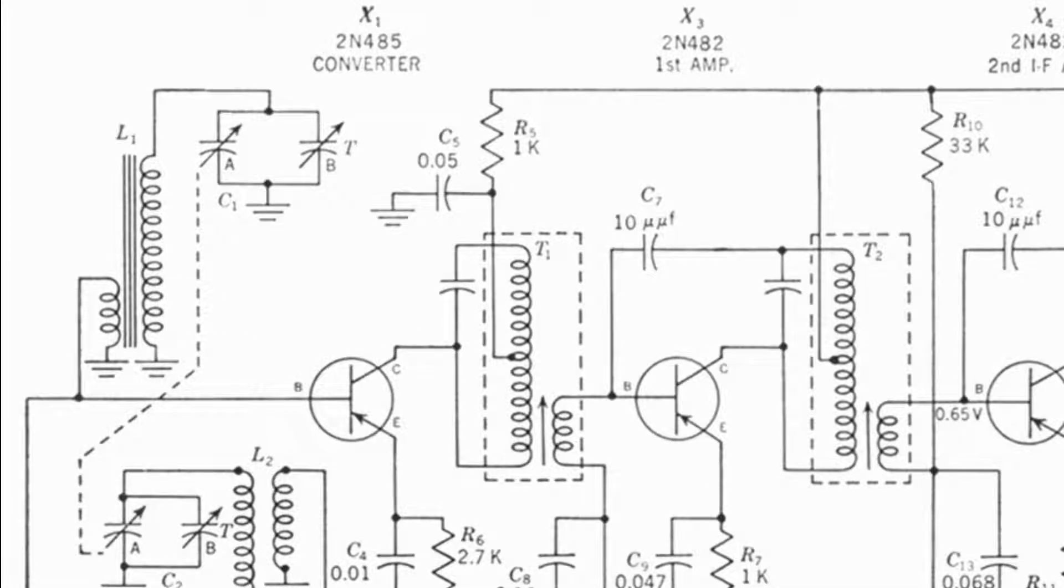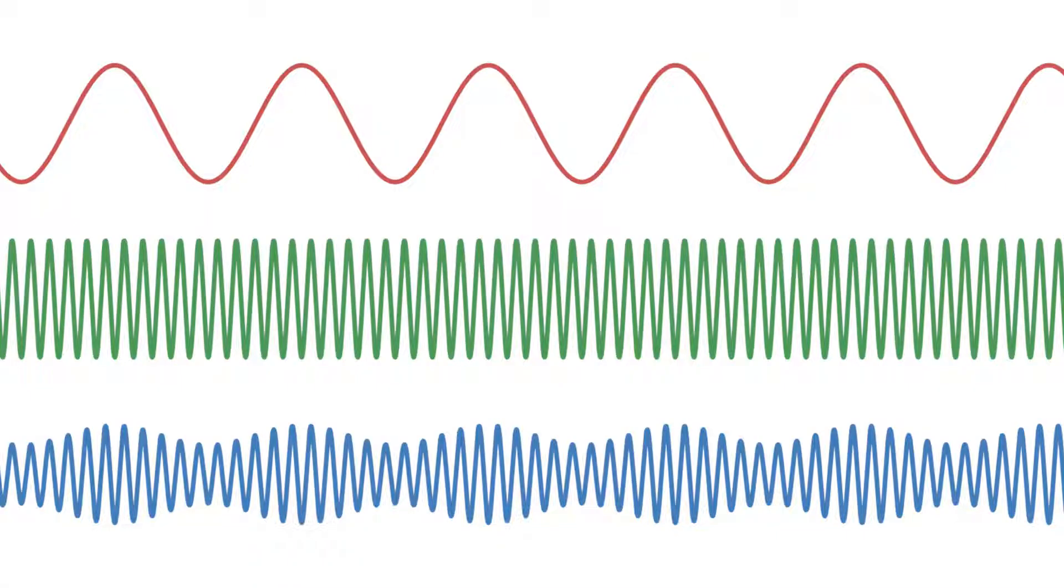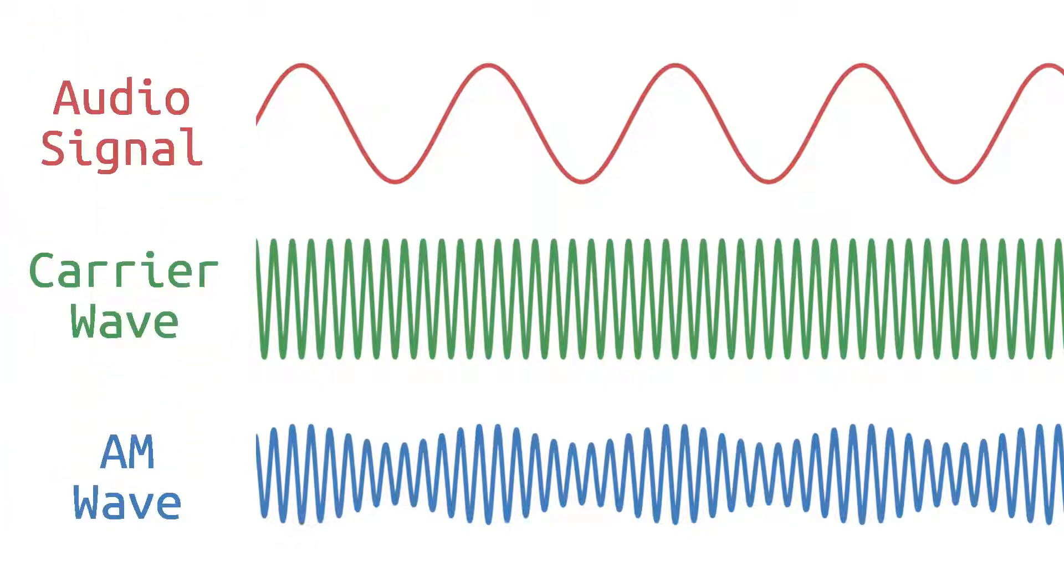Now we've selected our frequency, but what in the wave itself carries the audio signal? Well, in AM, it's the amplitude. Basically, the signal oscillates at the carrier frequency, which was 1 MHz in our case. But the amplitude of the signal is based on the audio signal itself.